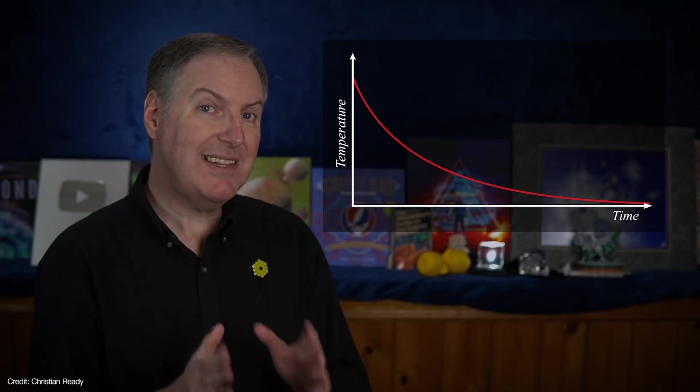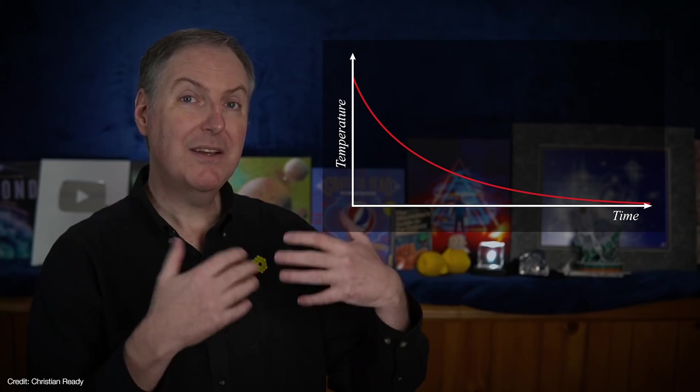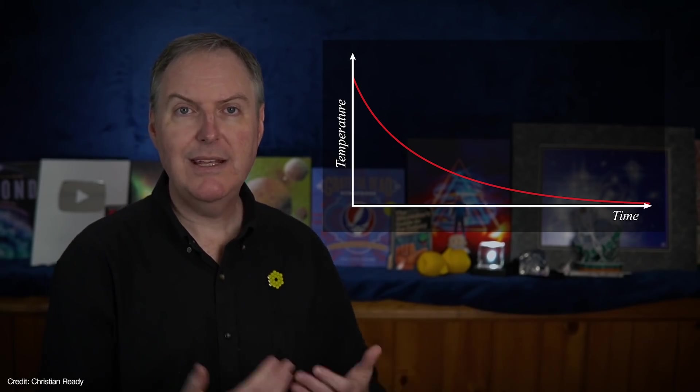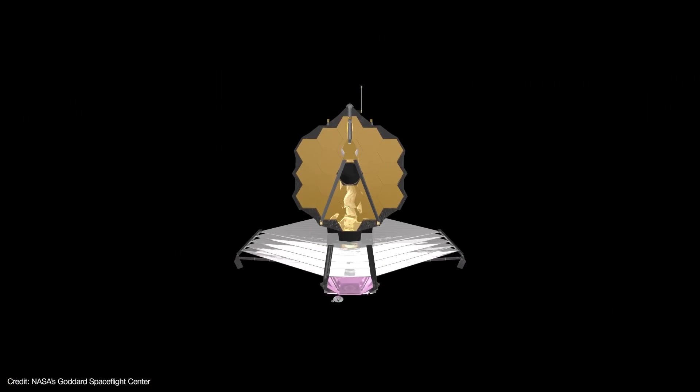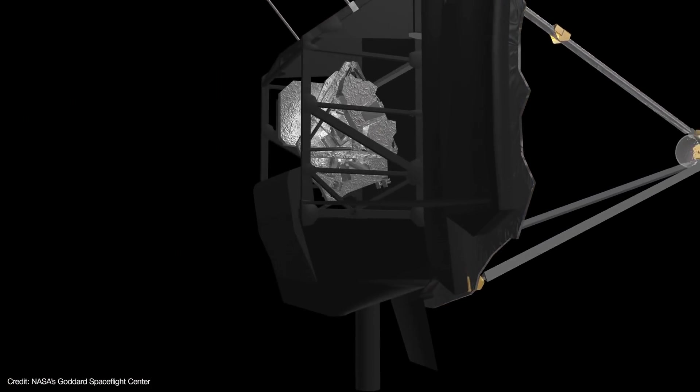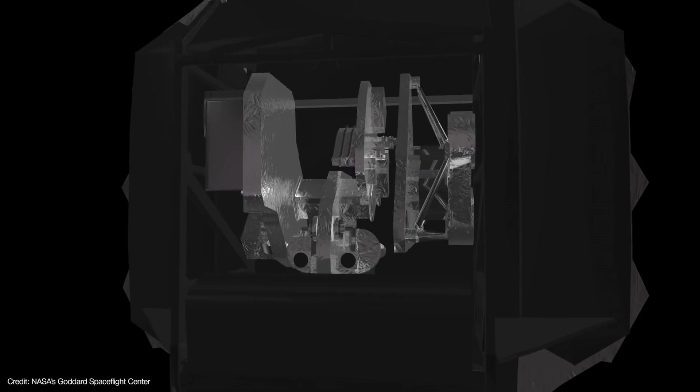For one, it takes that long to cool because the colder something gets, the longer it takes to radiate away its remaining heat. But another reason is that the instruments themselves were kept warm with heaters for about a month after the sun shield was deployed.